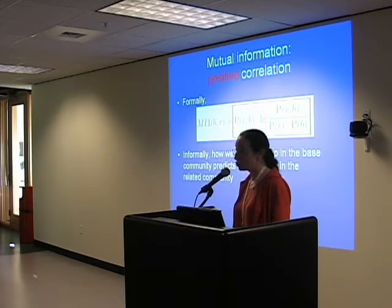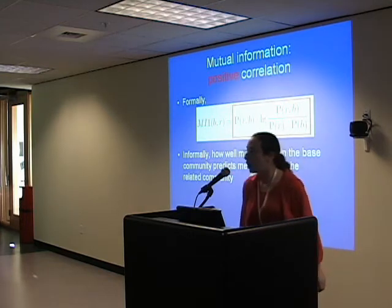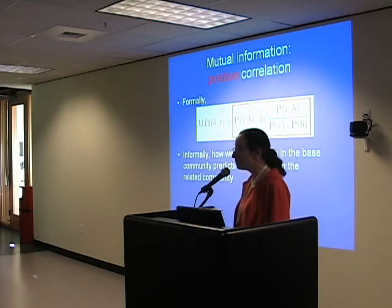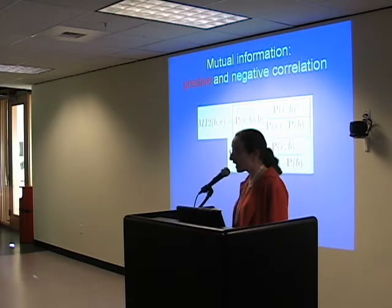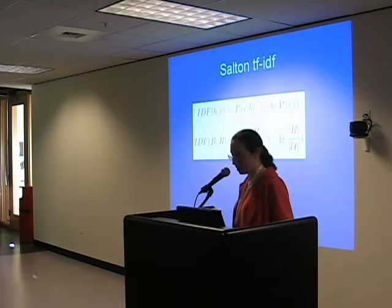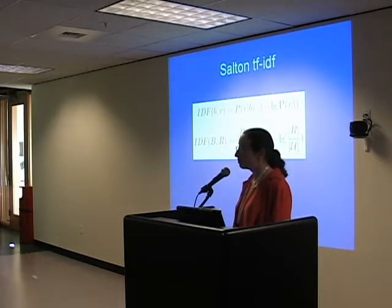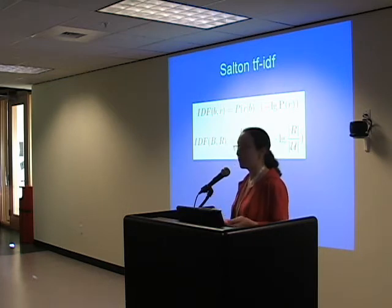Another measure that's used is mutual information. Specifically, I'm looking at positive correlation — how well membership in the base community predicts membership in the related community. There's another version where we add negative correlation: how well does non-membership in the base community predict non-membership in the related community. We can also use Salton's TF-IDF measure, saying two communities are similar if they have the same users in common.